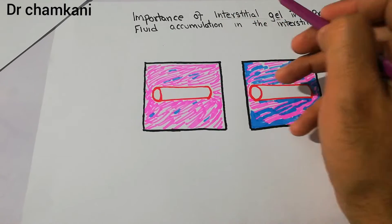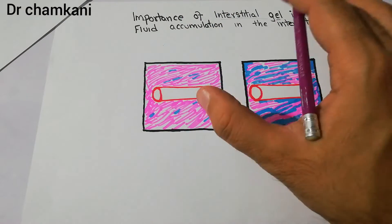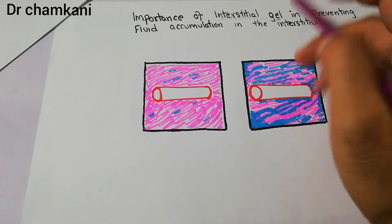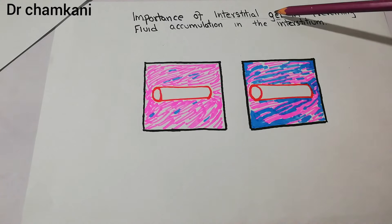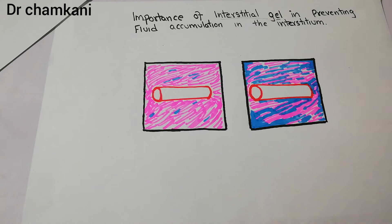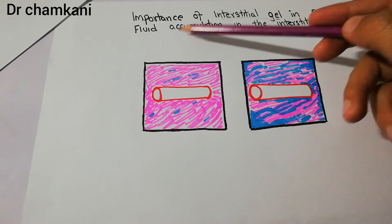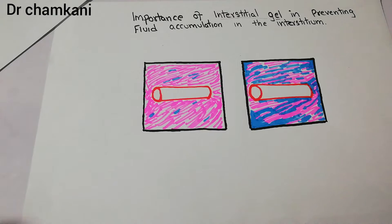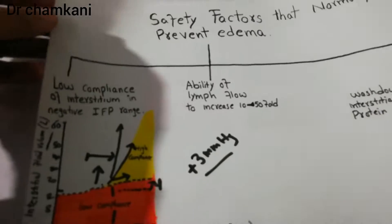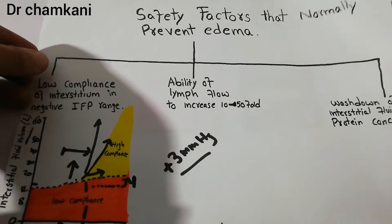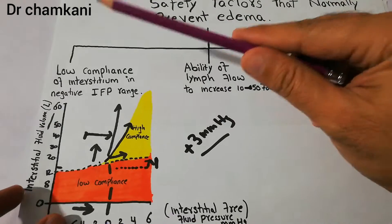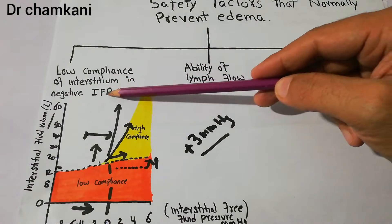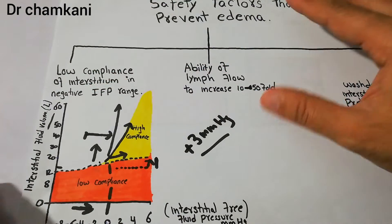Normally this interstitium is in the gel form — this is called the interstitial gel. We are talking about its importance: why, if the interstitium is in gel form, this will basically prevent fluid accumulation or prevent edema. We will go back to our previous lecture where we started discussing the safety factors that normally prevent edema, and discussed that the first factor is the low compliance of the interstitium in the negative interstitial fluid pressure range.